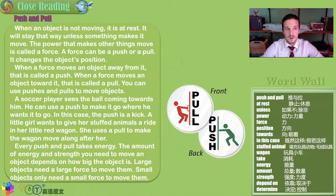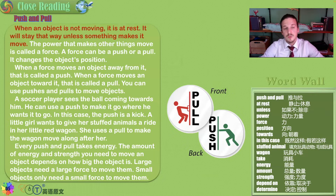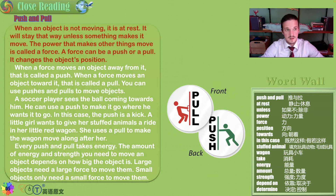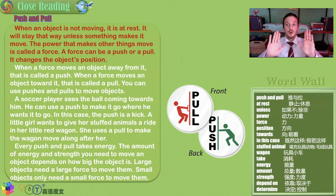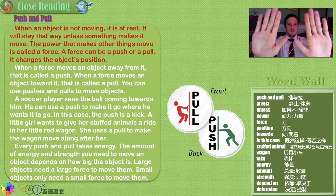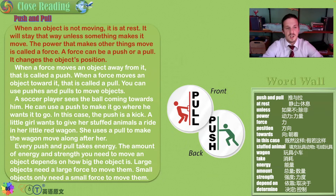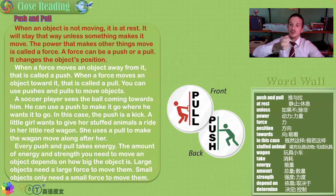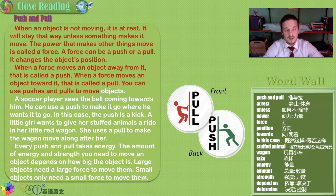Push and pull. When an object is not moving, it is said to be at rest. It will stay that way unless something makes it move — some energy. The power that makes other things move is called a force. A force can be a push or a pull — they are opposites — and it changes the object's position. Think about a door: you can push it open or pull it shut. When a force moves an object away, this is called a push because it repels.